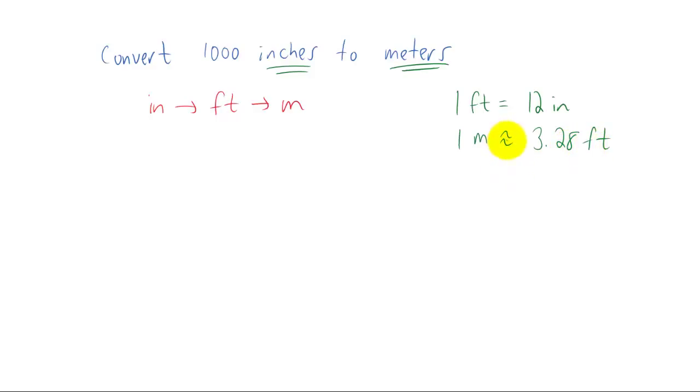And those conversions are 1 foot is 12 inches, and 1 meter is approximately 3.28 feet. Just something to keep in mind, this little squiggly equal sign is an approximate sign. That just means that 1 meter is not exactly 3.28 feet. So on this problem, we're approximating just a bit. But let's do it. Let's start with 1,000 inches.